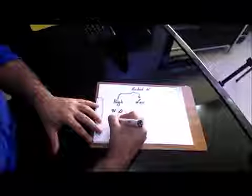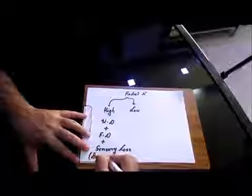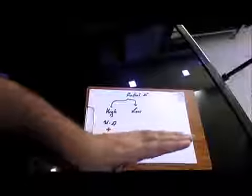In High Radial Nerve Palsy, you have wrist drop, finger drop, and sensory loss, specifically in dorsum of first web space. This area is supplied by Radial Nerve exclusively, Median Nerve exclusively, Ulnar Nerve exclusively. These are called Autonomous Zones. So with Radial Nerve Palsy, you have wrist drop, finger drop, sensory loss.